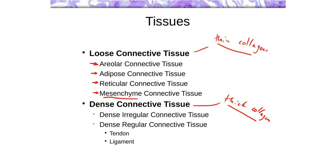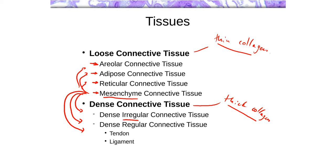Mesenchyme tissue is basically a tissue that's going to become one of the other types of tissues — it has the potential to become a variety of different connective tissues. When dealing with dense connective tissues, we can have dense irregular or dense regular connective tissue, and this refers to the arrangement of the fibers.